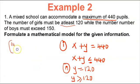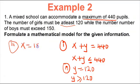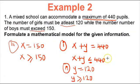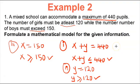Let us now move on to our third inequality. The number of boys must exceed 150. Boys are represented by X, so X equals 150 as the equation. Using the inequality, 'exceed' gives us greater than or equal to. So our third inequality is X ≥ 150. These are the required inequalities — we have formulated our mathematical model for the given information. Remember, you have to ensure that you know the words and the symbols that represent the inequalities so you'll be able to formulate the mathematical models.